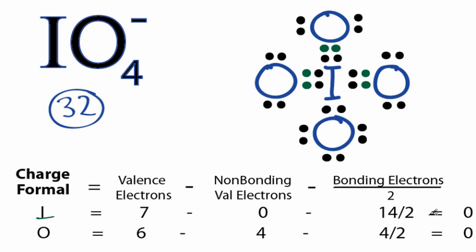we can see that the iodine now has a formal charge of 0, and these oxygens with the double bonds also have a formal charge of 0.